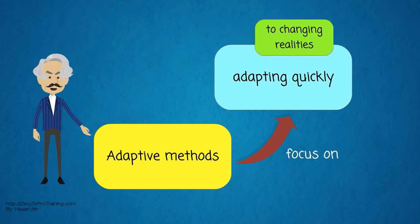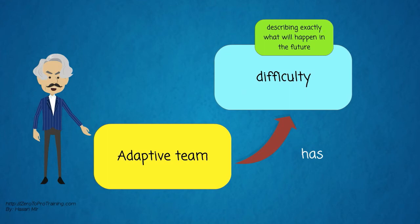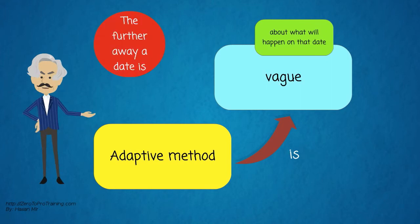Adaptive methods focus on adapting quickly to changing realities. When the needs of a project change, an adaptive team changes as well. An adaptive team has difficulty describing exactly what will happen in the future. The further away a date is, the more vague an adaptive method is about what will happen on that date.